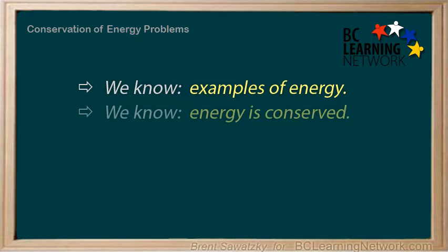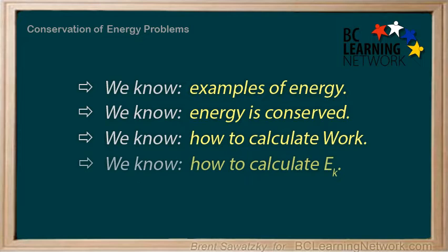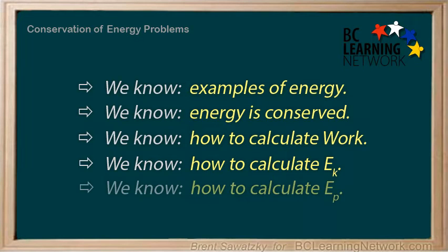We know that energy is conserved, in that it just doesn't disappear. We know how to calculate work, w equals fd. We know how to calculate kinetic energy, ek equals one half mv squared. And we know how to calculate mechanical forms of potential energy, ep equals fav times d, or in the case of gravitational potential energy, ep equals mgh.